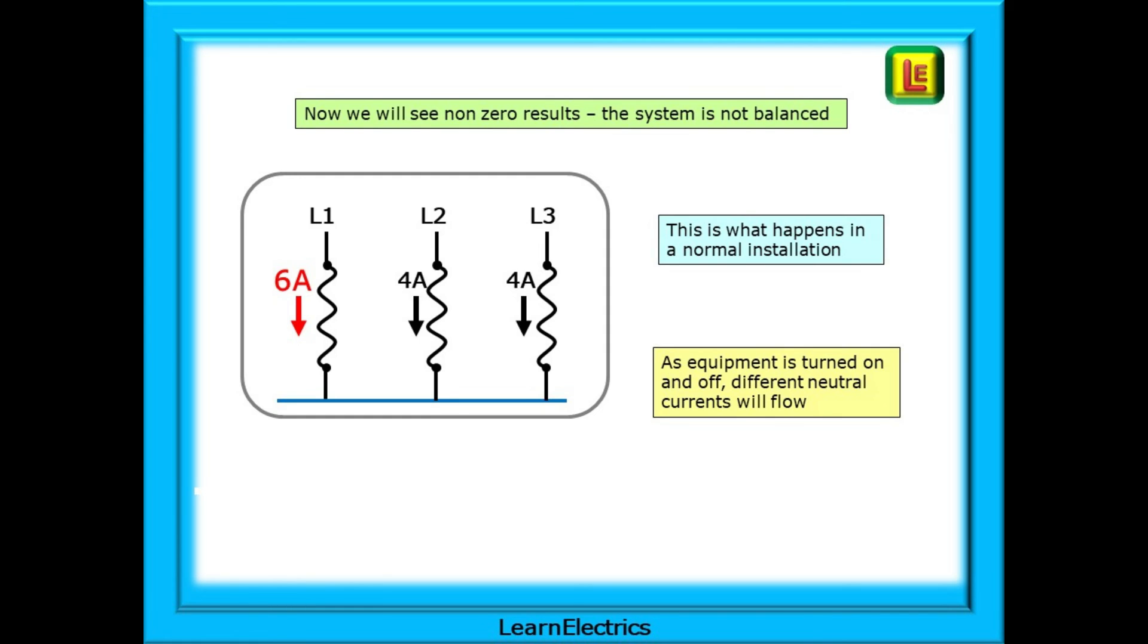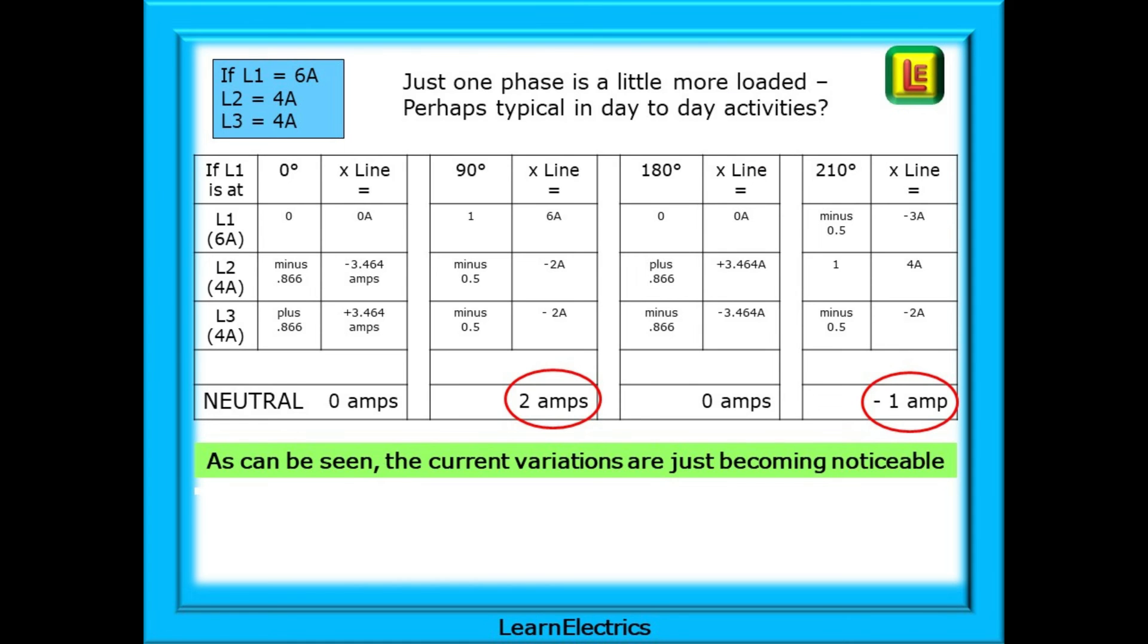We never have a perfectly balanced world. As the equipment is turned on and off during the day, different neutral currents will flow. Another heater is turned on, the kettle is used, the compressor is turned on. So here we have just one phase a little more loaded than the others. Using our table, we can see what effect this has on the neutral currents. As shown here, the imbalance at 90 degrees is 2 amps, and at 210 degrees, it is 1 amp. The current variations are just noticeable, and considering that this is with 14 amps total current down the three line conductors, this is not a problem for day-to-day activities.